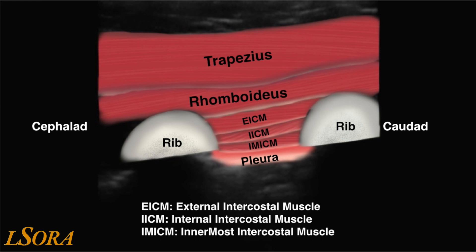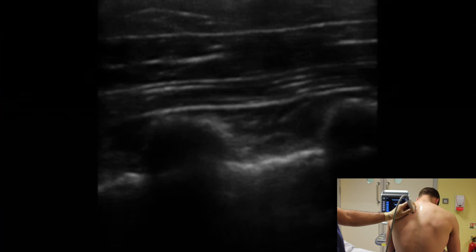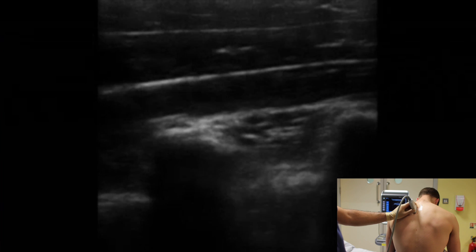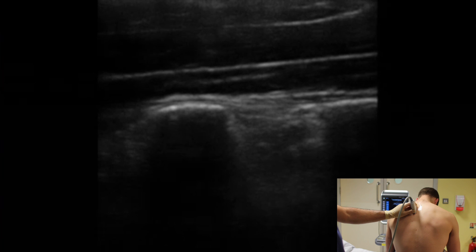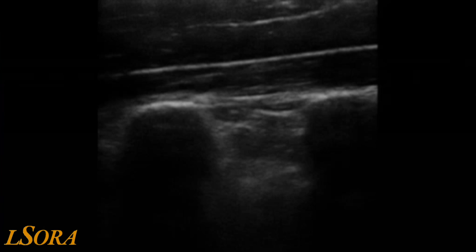The external and internal intercostal muscles as well as the innermost intercostal muscles are demonstrated here for clarity. The paramedian orientation of the probe is maintained as it is slid towards the midline. You will note the ribs travel deeper into the tissues until you get to the costo-transverse junction. At this point, the curved appearance of the rib is replaced by a much more superficial, flatter, tombstone-like appearance of the transverse process.